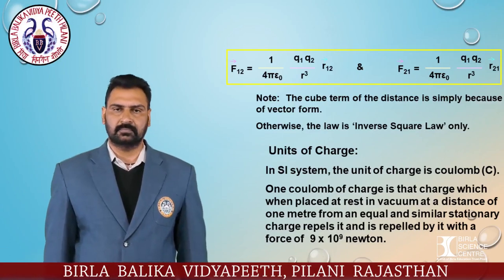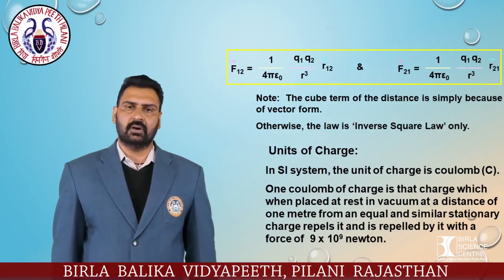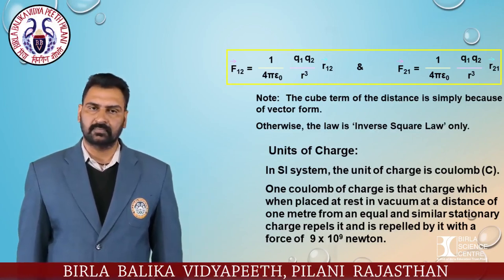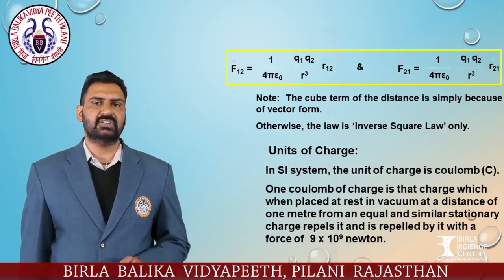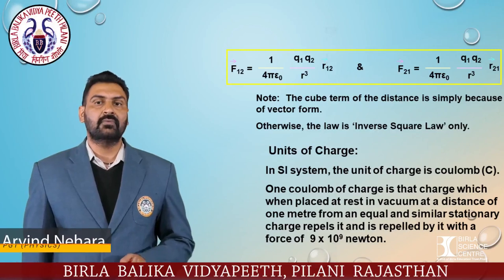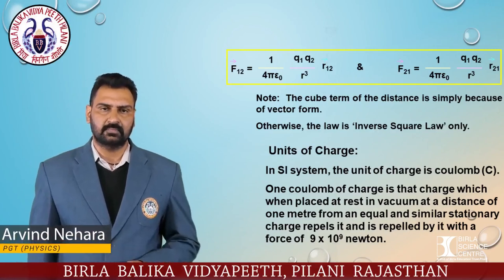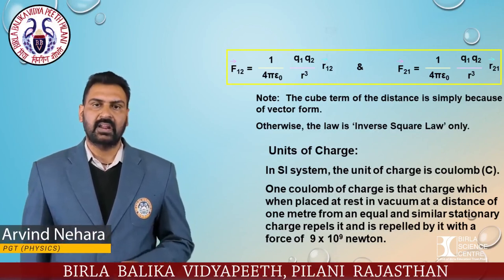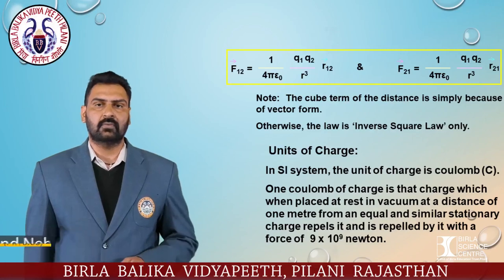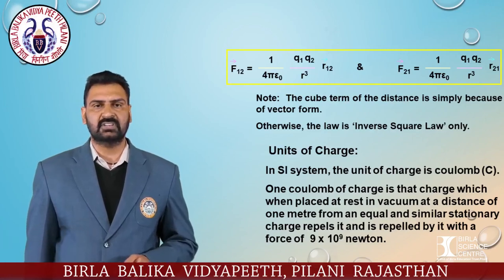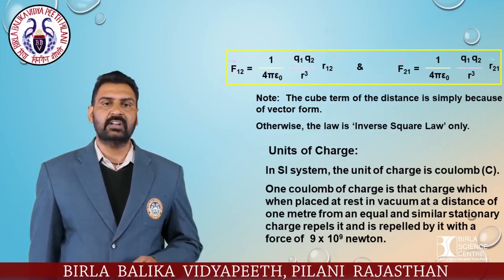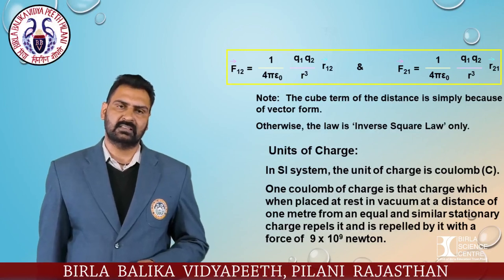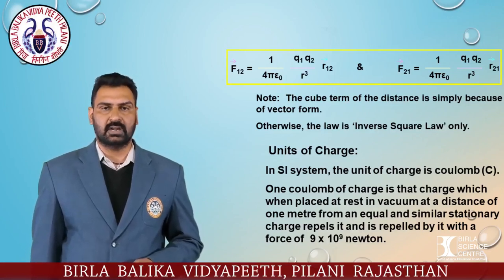The SI unit of charge is the coulomb. One coulomb of charge is that charge which, when placed at rest in vacuum at a distance of one meter from an equal and similar stationary charge, repels it with a force of 9 × 10⁹ newtons.